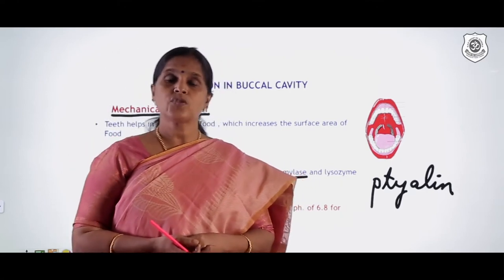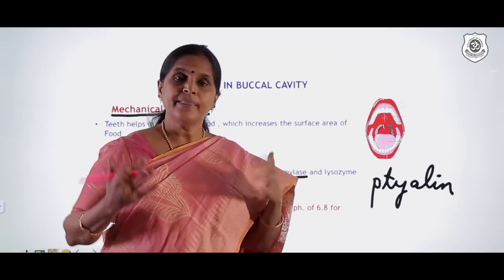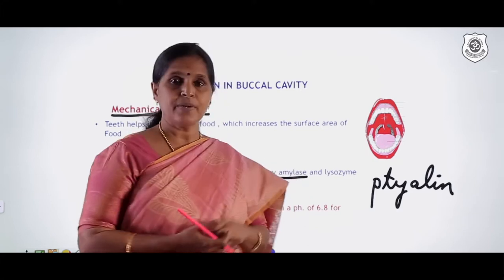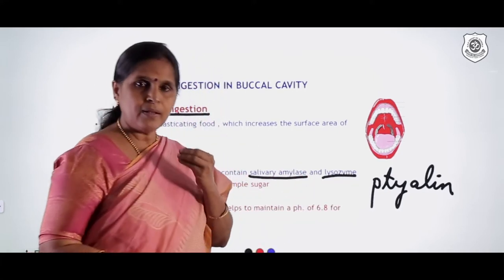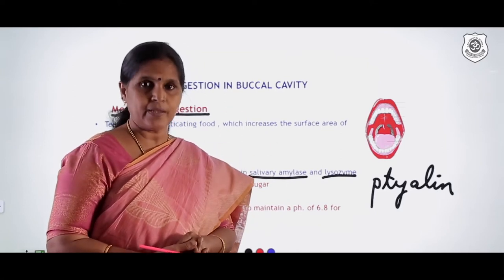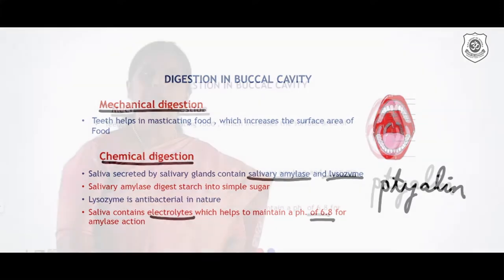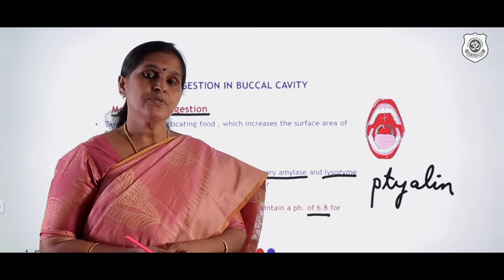Salivary amylase acts on complex polysaccharides like starch and breaks them down into simple sugars. Anything complex cannot be absorbed by the bloodstream, so it must be broken down into simple substances. The chemical lysozyme is antibacterial and kills bacteria in the food. There are also electrolytes — sodium chloride, potassium, and bicarbonate ions — which maintain an optimum pH of 6.8 for salivary amylase to act.